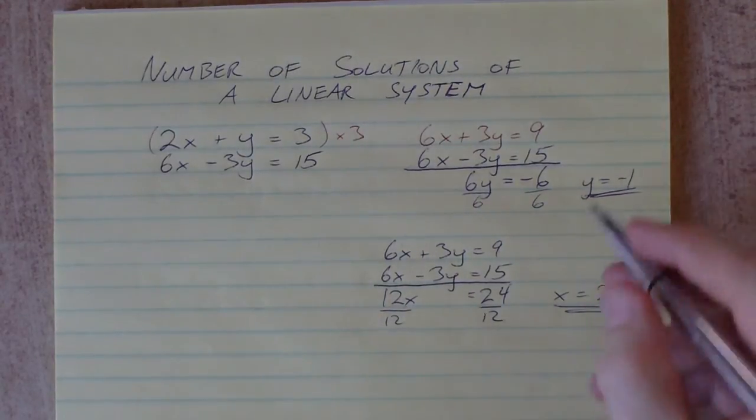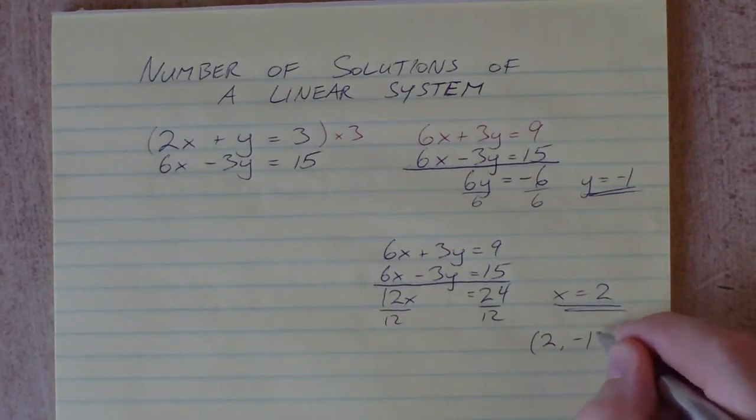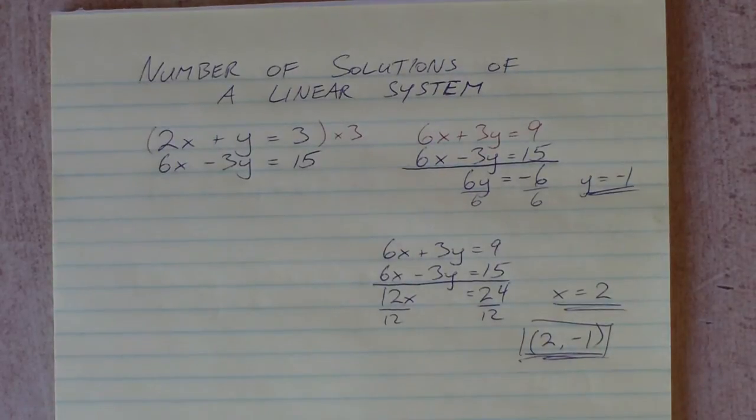So there's the solution for those two equations. This x and y gives us the coordinates of a single point: (2, -1) being our final solution.